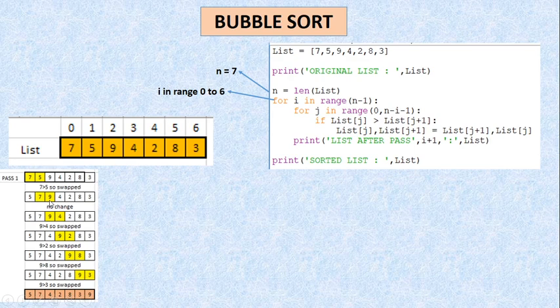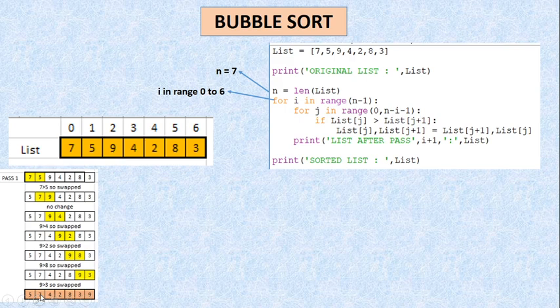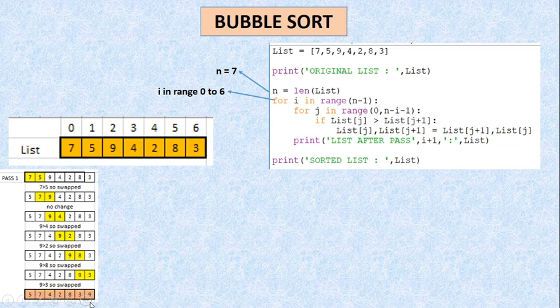फिर 9 को 2 से compare किया — again swapping हो गई, 9 पीछे, 2 आगे। फिर 9 को 8 से compare किया — again swapping। फिर 9 को 3 से compare किया — again swap हो गया। So after completion of pass 1, मुझे जो list मिली: 5, 7, 4, 2, 8, 3, 9। यहाँ अगर ध्यान से notice करो — जो मेरा सबसे बड़ा element है पूरी list में, यानी 9, वो अपनी correct position पे आ चुका है according to the sorted list। After completion of pass 1.